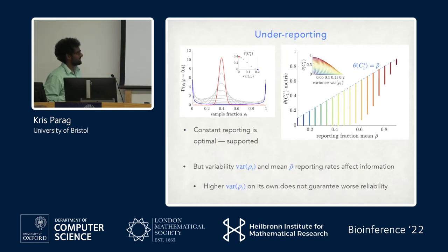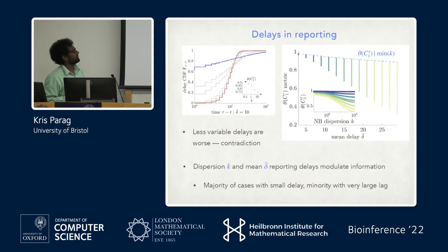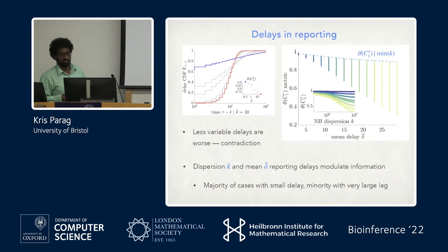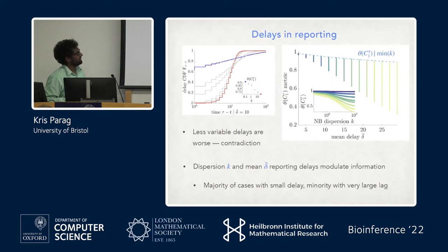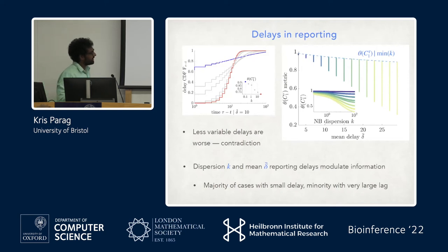The reason we looked at this is to challenge the idea that higher variability in reporting always guarantees worse reliability. We can do the same for delays using cumulative distribution functions. The most uniform-like CDF gives the best answer. These use a negative binomial delay distribution with mean delay 10, where k is the dispersion parameter. Again a similar picture: for a fixed amount of information you can have different variabilities and dispersions.